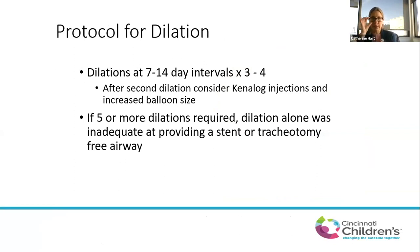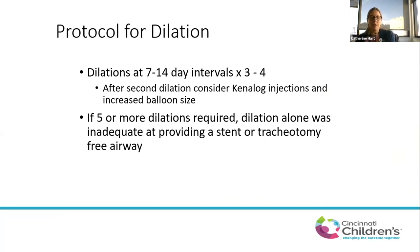We typically dilate at seven to fourteen day intervals, around three to four times. Each time you lose a little bit of ground, so you often need to redilate. Around the second dilation, we'll consider injecting steroid or doing adjuvant scar division if we're not making the hoped-for progress. If you've done four or five dilations and aren't getting anywhere, you have to acknowledge that dilation alone isn't sufficient and consider other options.